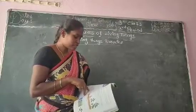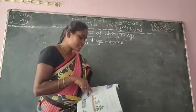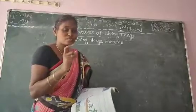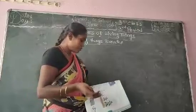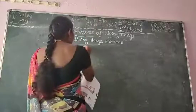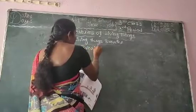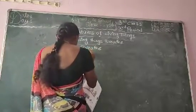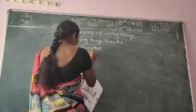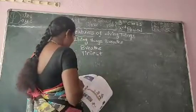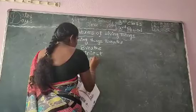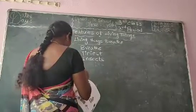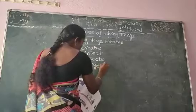From the tiniest insect to the largest animal, every living thing breathes. Spelling practice — breathe: B-R-E-A-T-H-E. Tiniest: T-I-N-I-E-S-T. Insects: I-N-S-E-C-T-S. Largest: L-A-R-G-E-S-T.